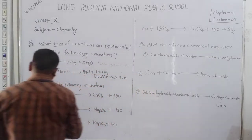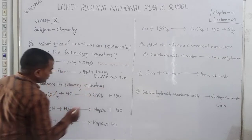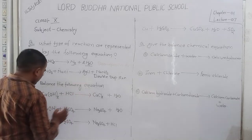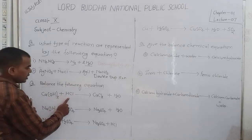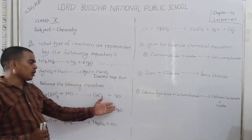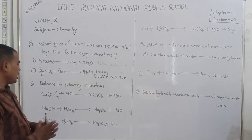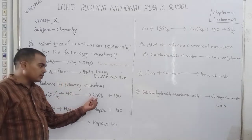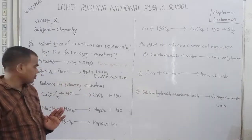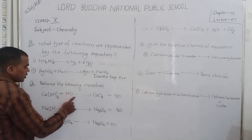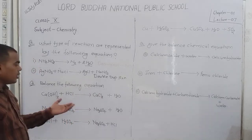The second question is to balance the following equations. Here, calcium hydroxide Ca(OH)2 reacts with HCl, that is hydrochloric acid, and produces calcium chloride and water. In this equation, the number of calcium atoms on the left is 1 and on the right is 1 — calcium is already balanced. Number of chlorine: 2 on the left, 1 on the right — chlorine is not balanced. Number of oxygen: 2 on each side — not balanced yet. Number of hydrogen is also not balanced.